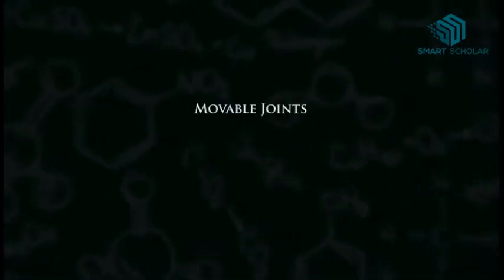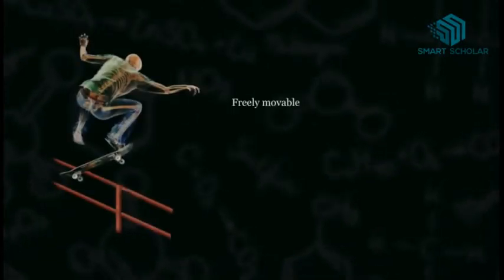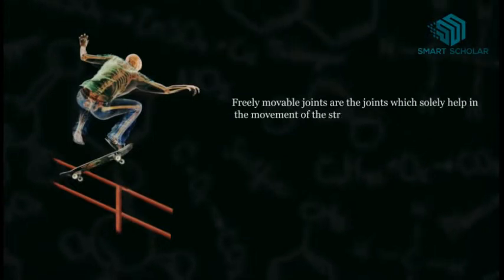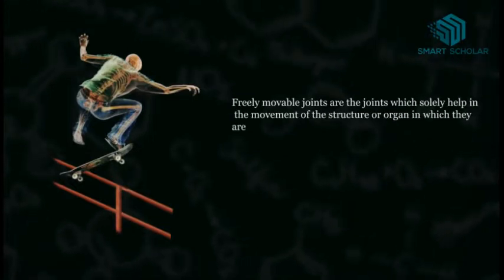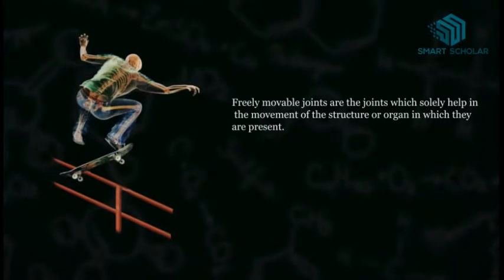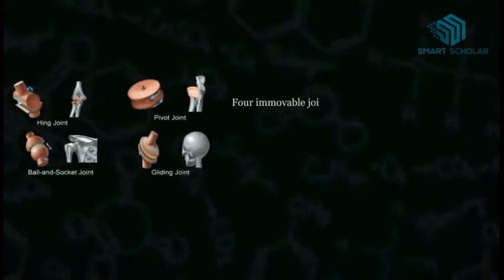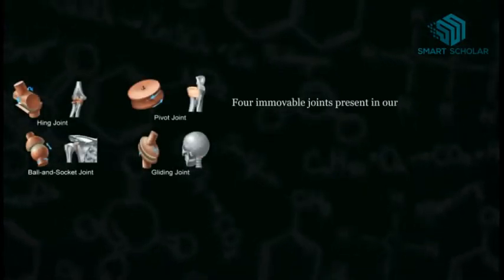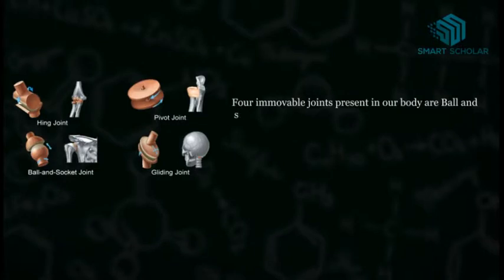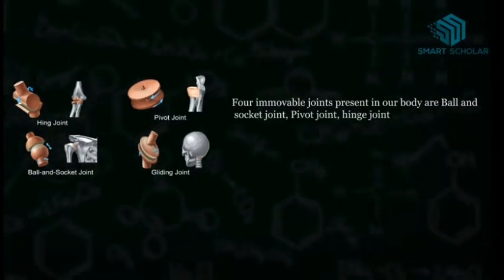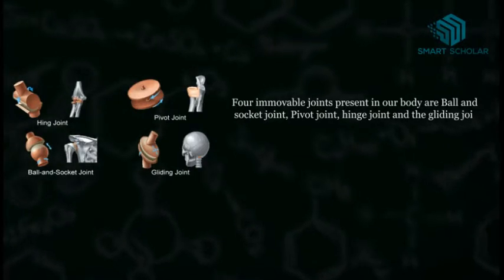Freely movable joints are joints which solely help in the movement of the structure or organ in which they are present. Four types of freely movable joints present in our body are the ball and socket joint, pivot joint, hinge joint, and the gliding joint.